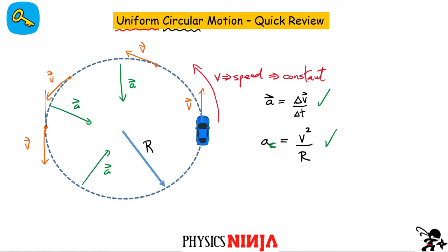Thinking about Newton's second law: if I add up all the forces acting on an object, they must equal mass times acceleration. Since there has to be an acceleration toward the center of the circle, there must be a net force acting on the object. The force is always in the same direction as the acceleration — toward the center — for all of these circular motion problems.